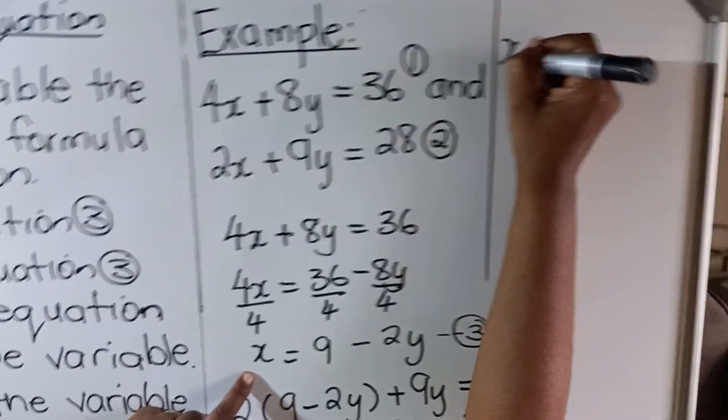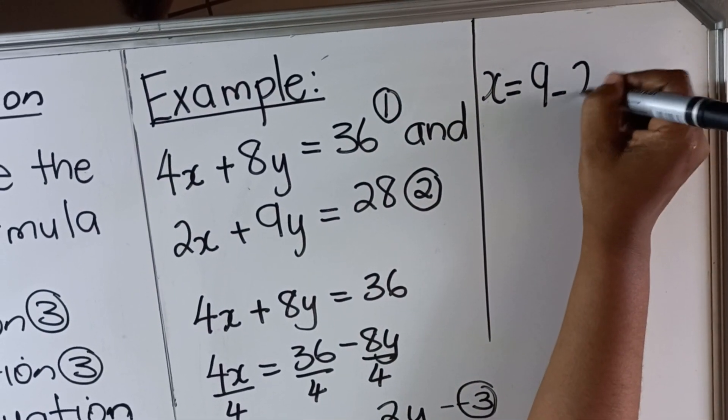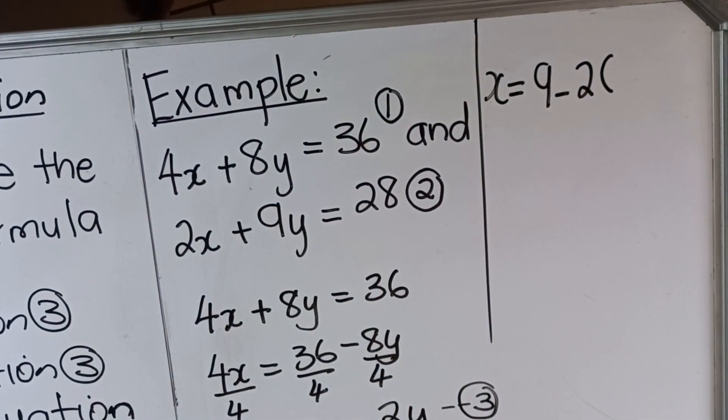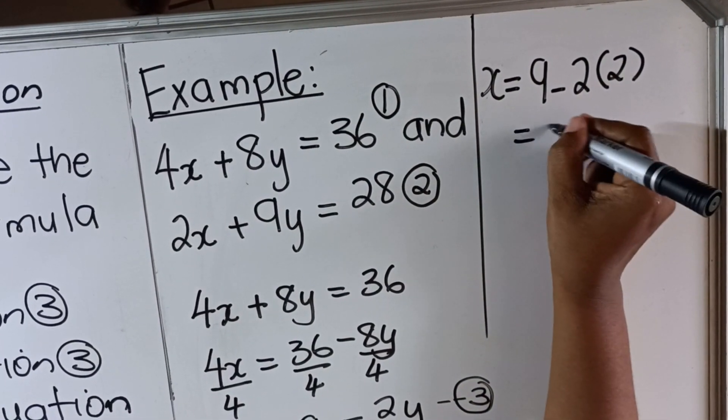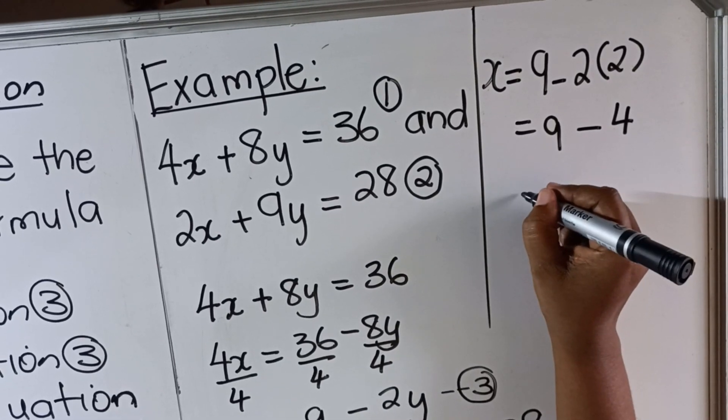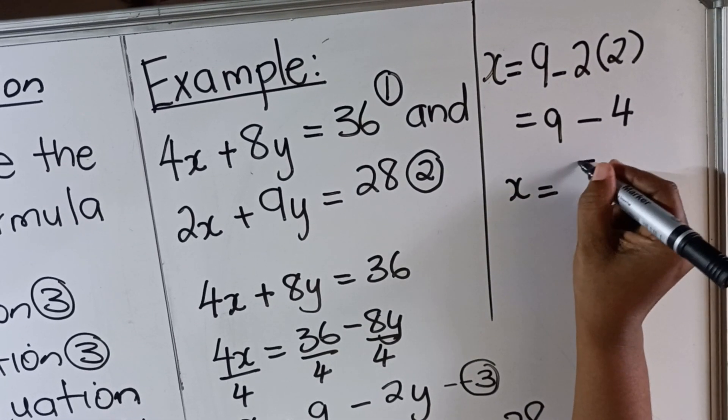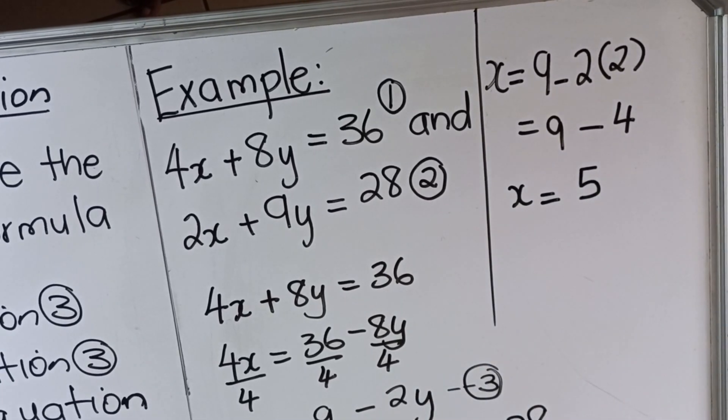So you have x = 9 - 2 times y, but my y is 2, so it's 9 - 2 times 2, which is 4. My x = 9 - 4, which is 5. So this is my answer.